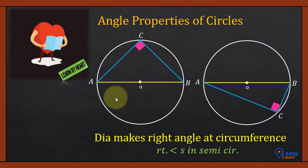Now learn by heart, you have to observe the property. You have to memorize the properties. Diameter makes right angle at the circumference of the circle. And the other name is right angle in semicircle.